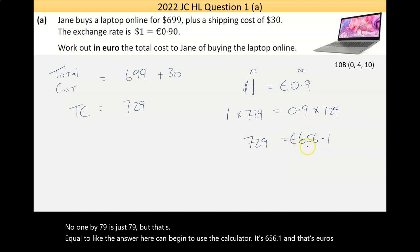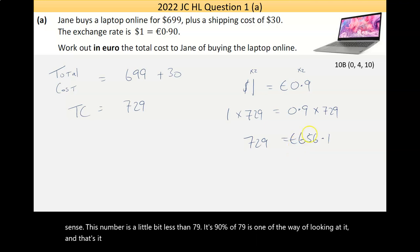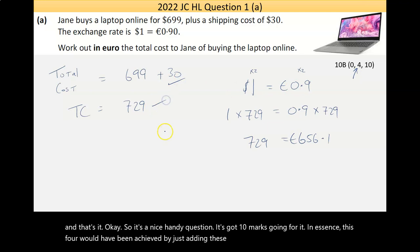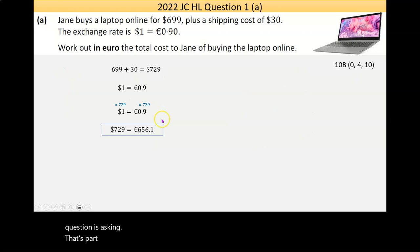Makes sense. This number is a little bit less than $729. It's 90% of $729 is one other way of looking at it. And that's it. It's a nice, handy question. It's got 10 marks going for it. In essence, this 4 marks would have been achieved by just adding these two numbers. So it's always worth trying something, even if you're not quite getting what the question is asking.